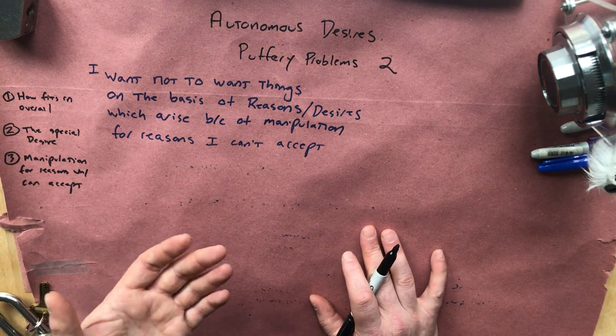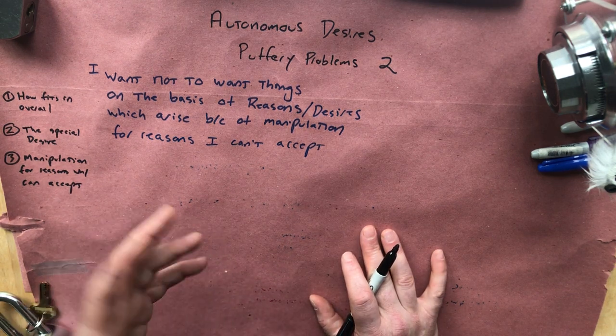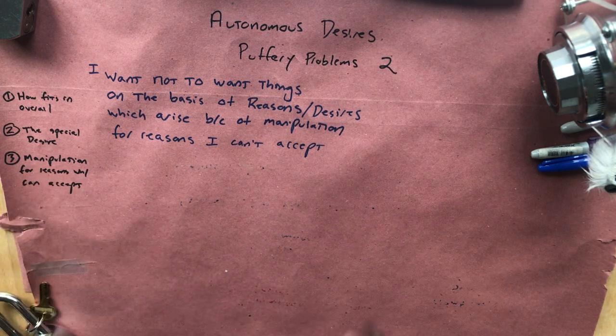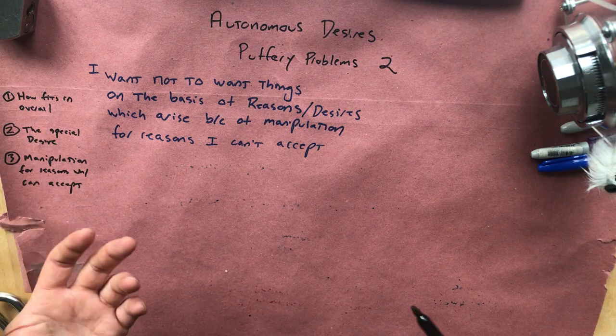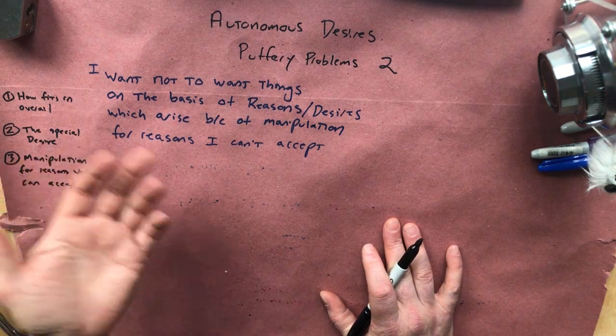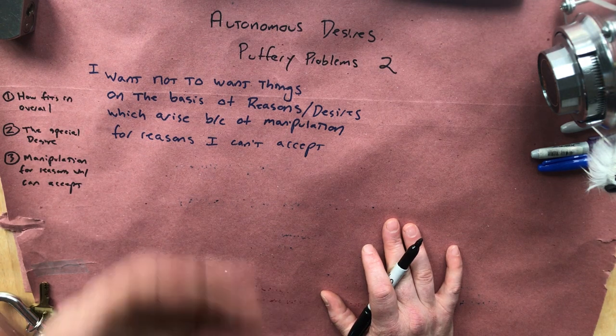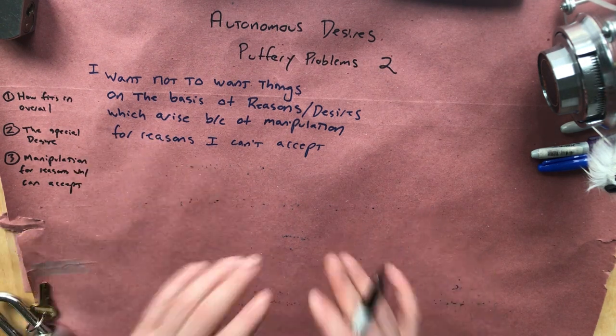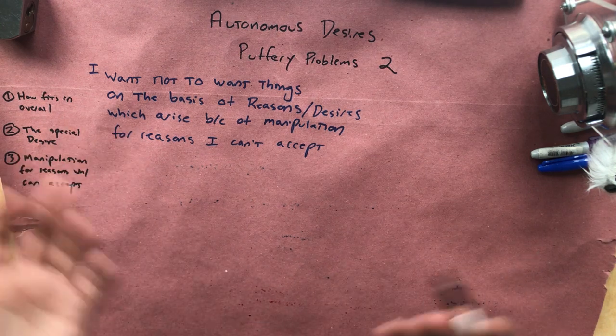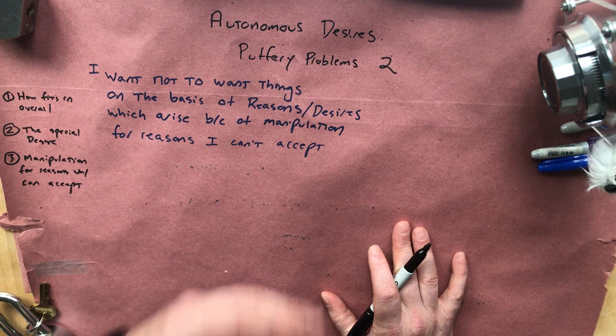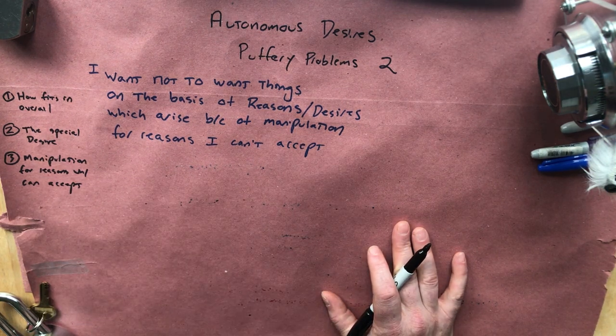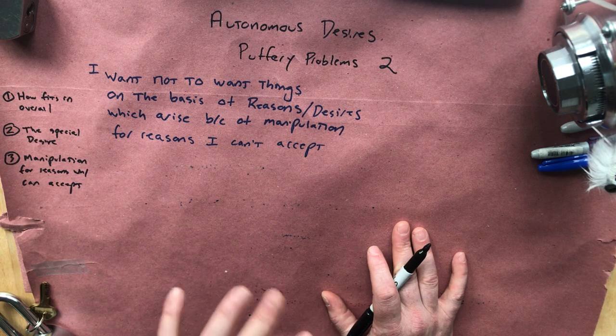So you might think, though, that he's going a little bit too far. He's going overboard on this not being able to do anything about it. Maybe we can have desires that arise because of ads, but then make a sort of autonomous choice about whether we want to endorse those desires. Remember the whole endorsement thing, second order desire thing that's central to the idea of autonomy, the idea that some of our desires we think about and decide, yeah, those are the desires, those are the ones that really reflect who I am.